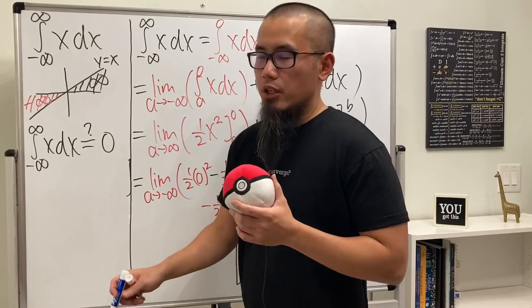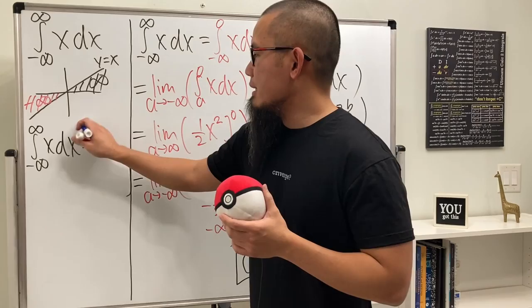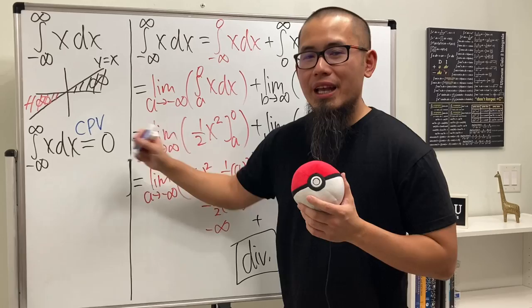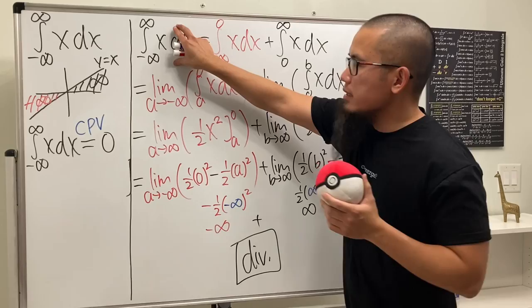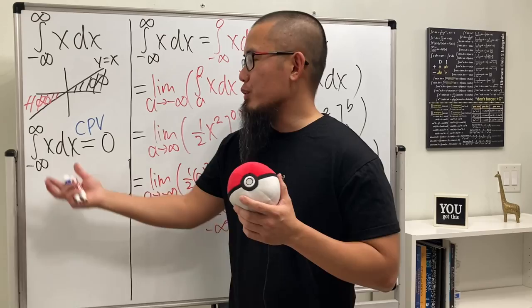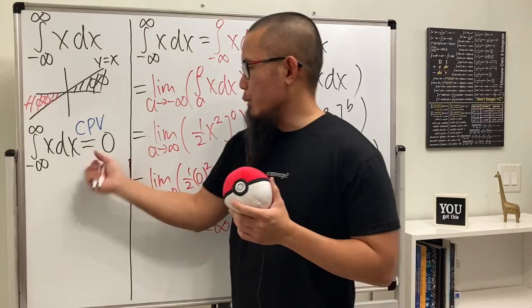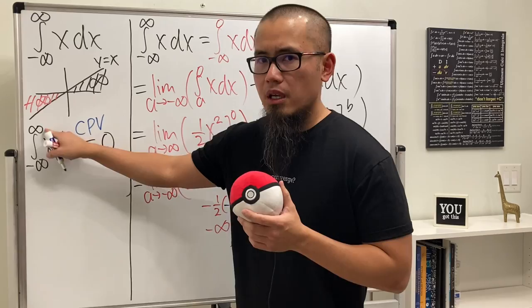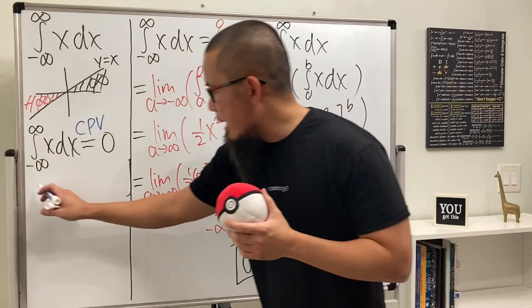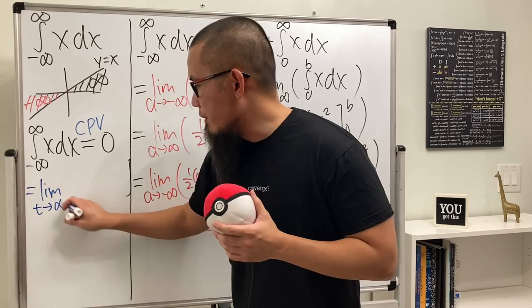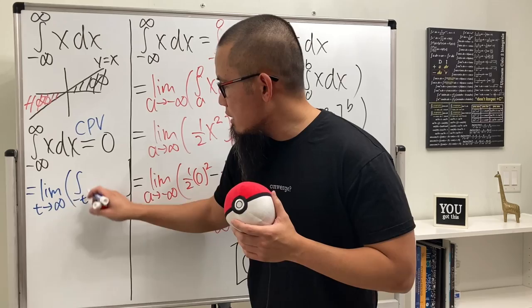In calculus, this is the standard result: the integral diverges. However, if you want the answer to be zero, you don't just write a question mark — you write CPV, namely the Cauchy Principal Value. This is a way to assign a value to a divergent integral. Instead of using separate variables a and b, we use the same variable: the limit as t goes to infinity of the integral from negative t to t of x dx.